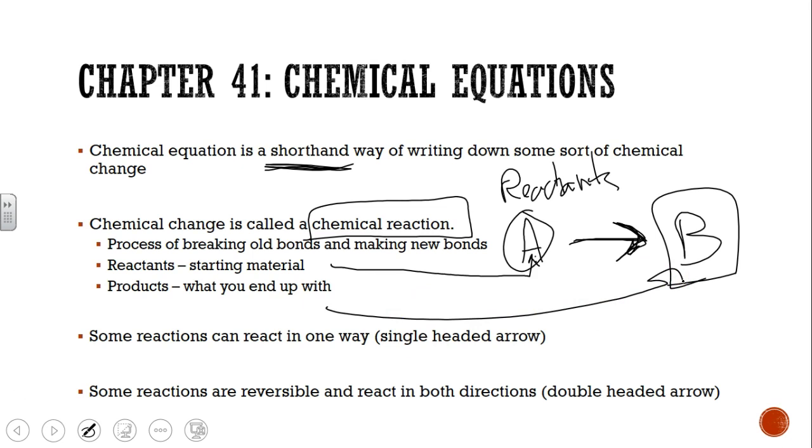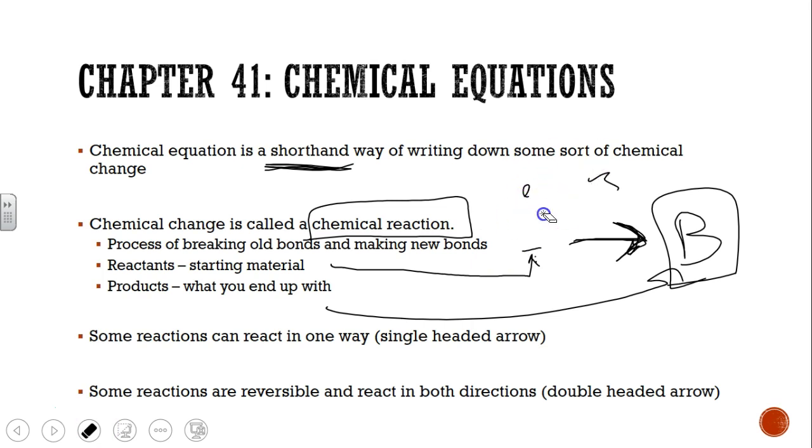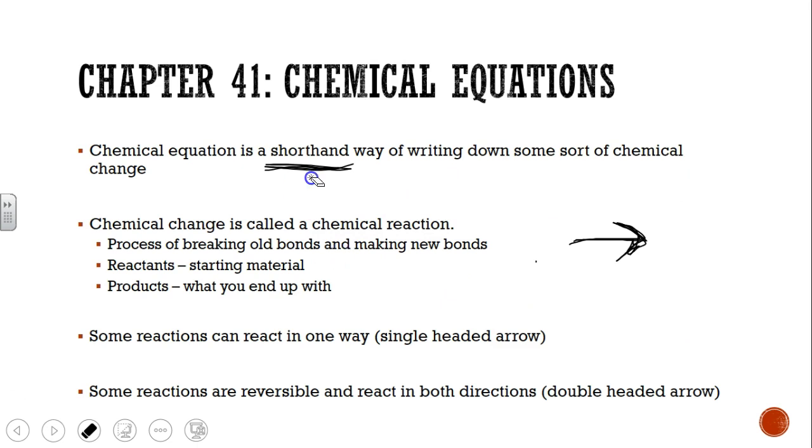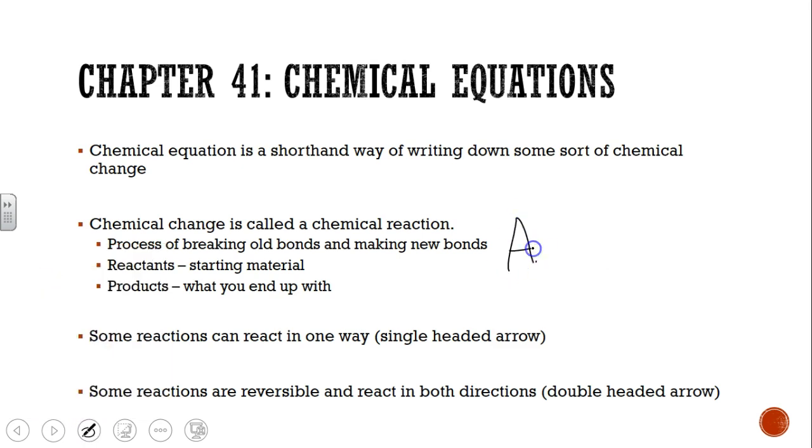The thing that I want to point out here is that a chemical reaction doesn't have to just be one reactant and one product. It can be multiple. Chemical reactions can become really complex. In this case, I have two reactants and I have three products, and that can happen.